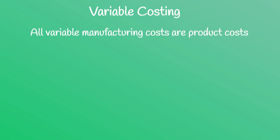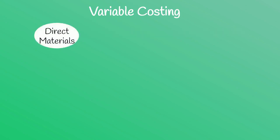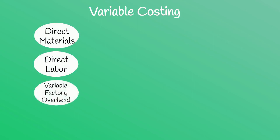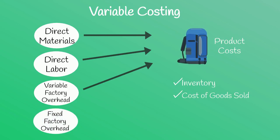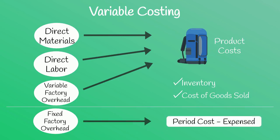With variable costing, all the variable manufacturing costs are included as product costs — so direct materials, direct labor, and variable factory overhead are part of product costs and included in inventory and cost of goods sold. But fixed factory overhead is not included as part of product costs. It is not included in inventory or cost of goods sold; it is treated instead like a period cost, and all of the fixed factory overhead is expensed.